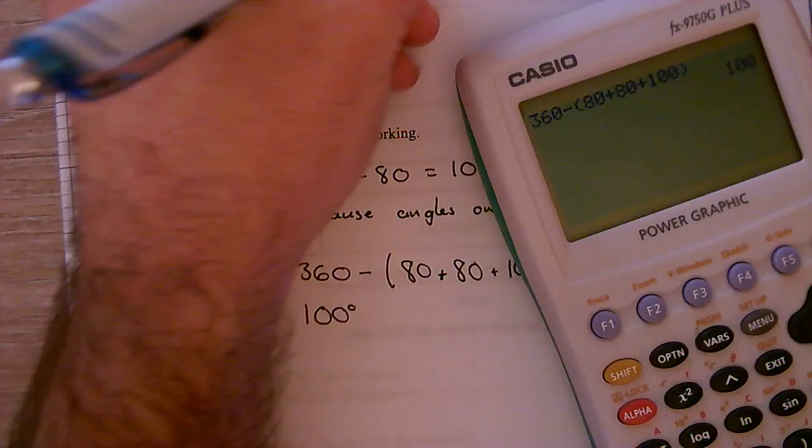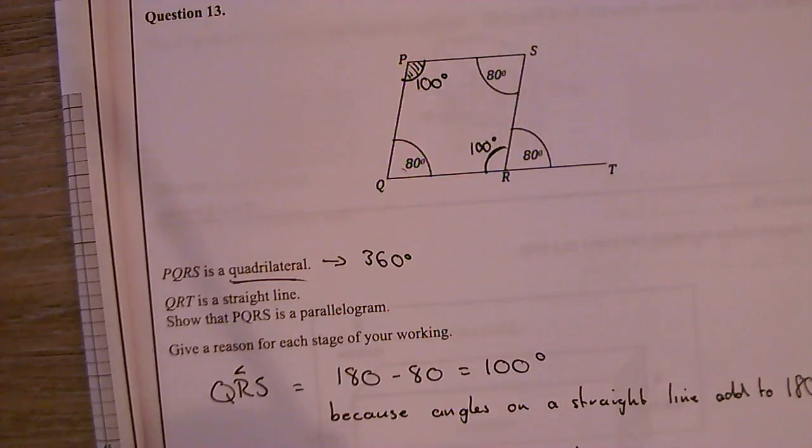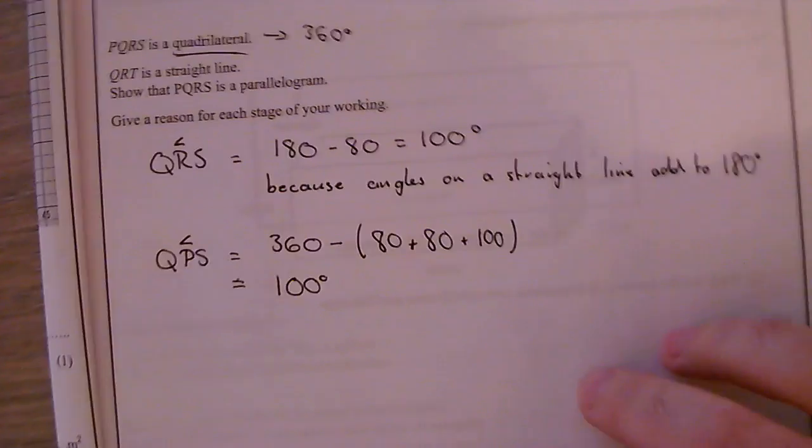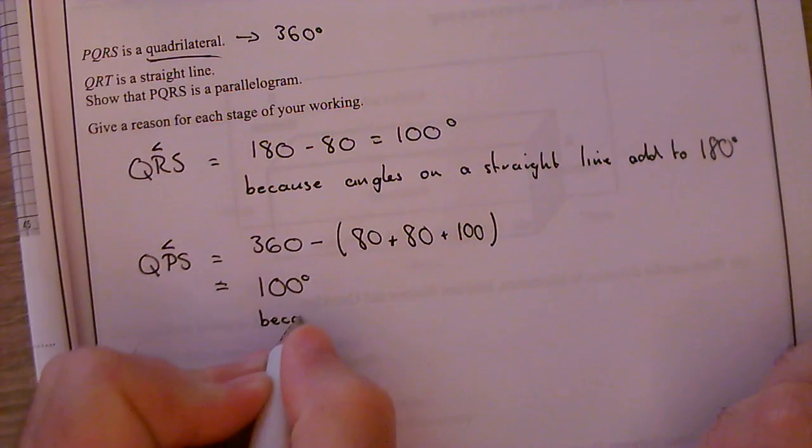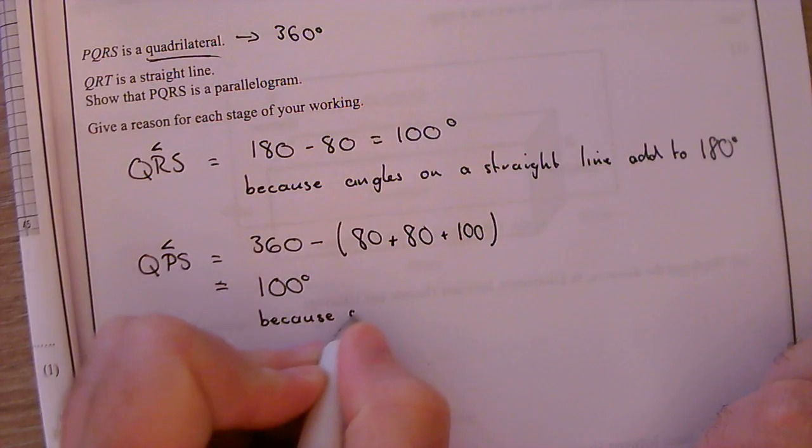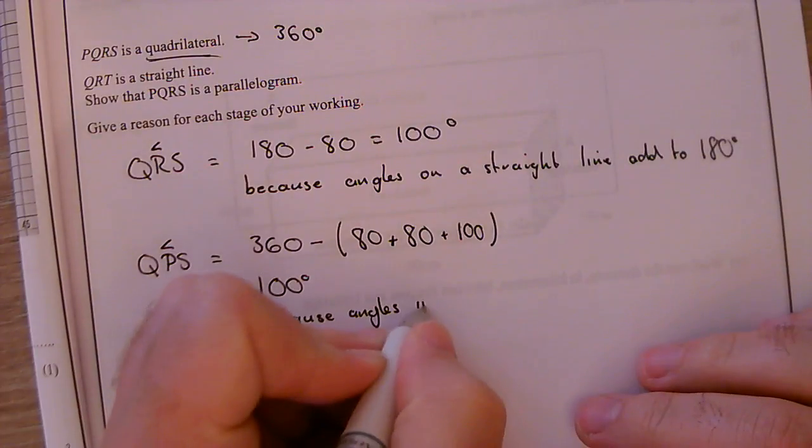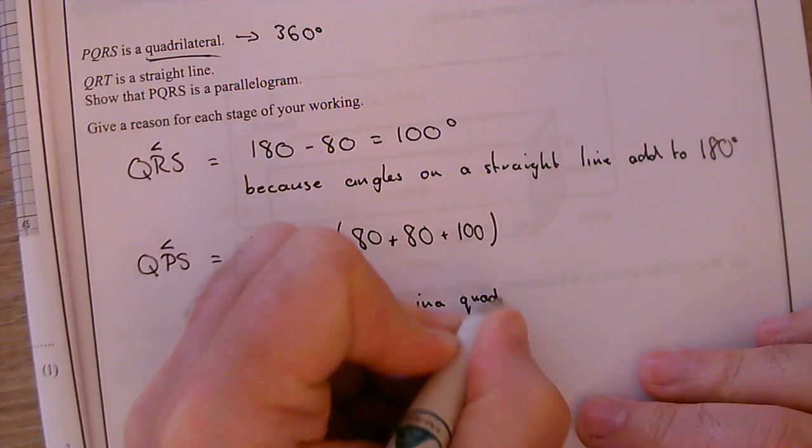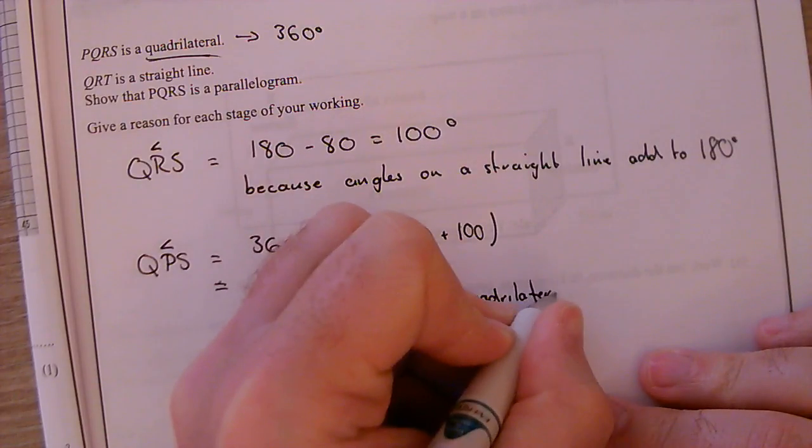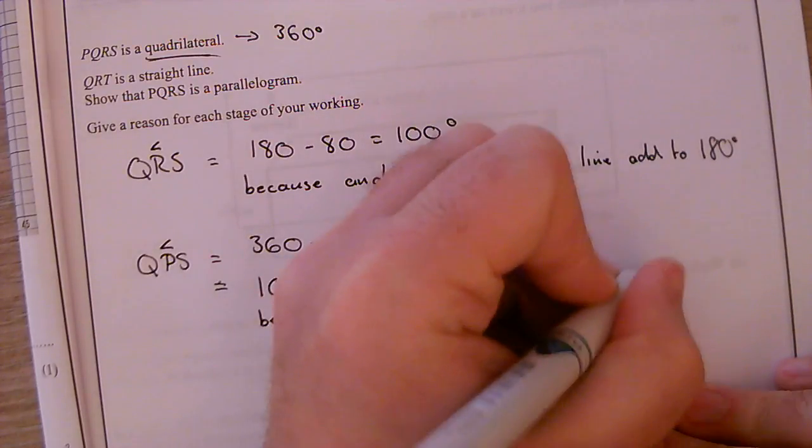So that there is 100 degrees as well, OK, but I need to provide a reason. So, because angles in a quadrilateral add to 360.